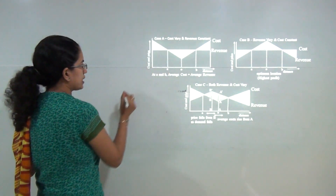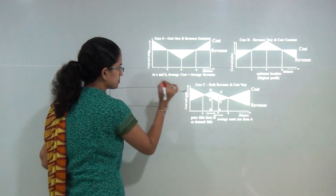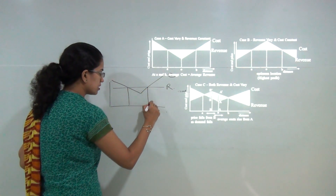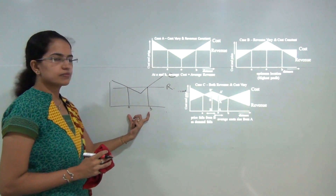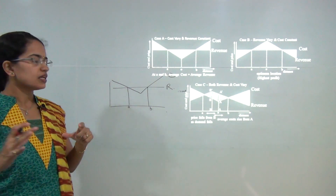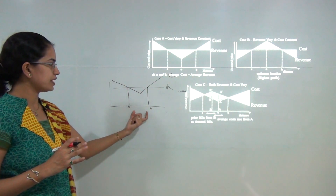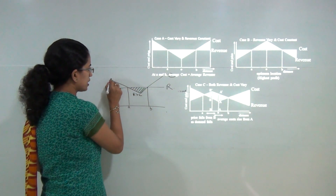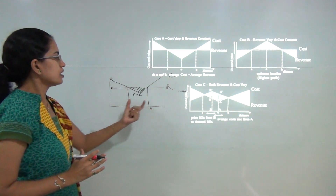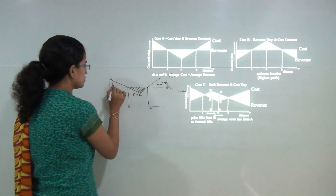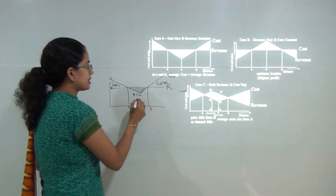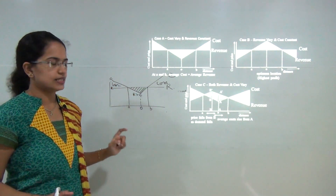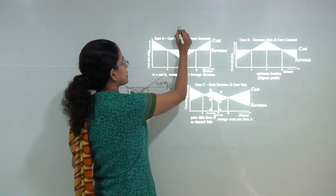Under Case 1, revenue is constant and cost varies. Region A to B is the profit area because only in this section is revenue greater than cost. Outside A and outside B, cost is more than revenue, so those regions are loss-making. The point O where you have the least cost would be the optimal location for the industry. This was the first case where he talked about revenue as constant.